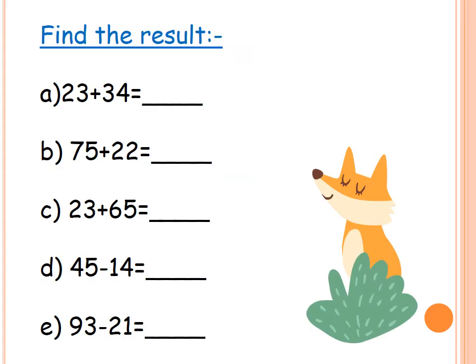Now, with the addition of two-digit numbers. The first one: 23 plus 34. We have to write the place value of each digit. In 23, 3 is ones and 2 is tens. In 34, 4 is ones and 3 is tens. Then, we have to start addition with the ones. First, we add 3 plus 4 — ones plus ones: 3 plus 4 equals 7. And let's go to the tens: 2 plus 3 equals 5. So, the answer is 57.